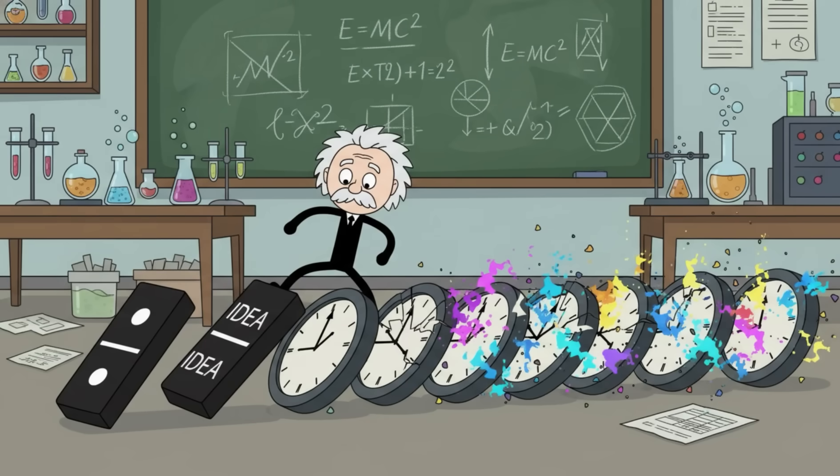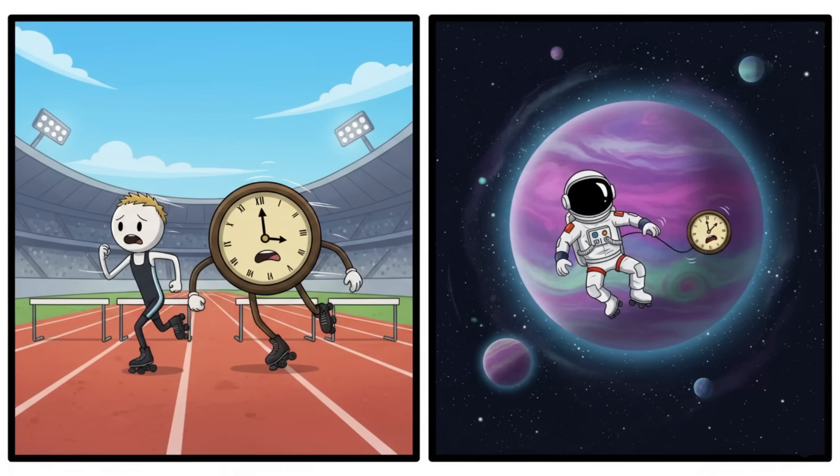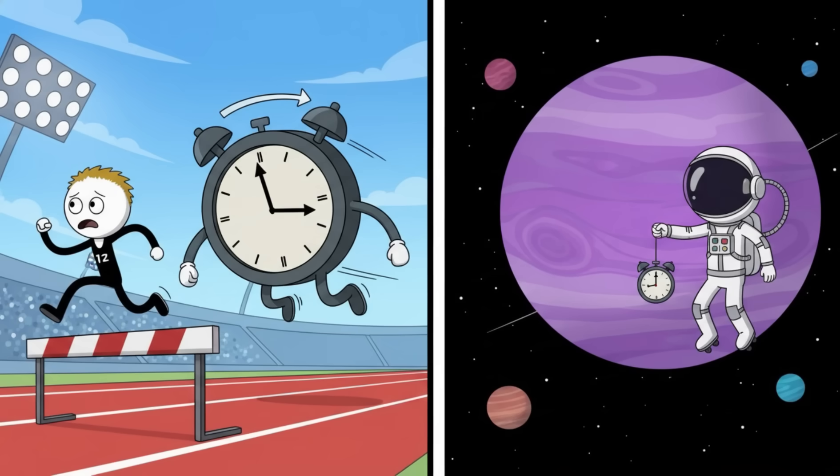Einstein kicked the first domino when he showed that time doesn't flow the same for everyone. It stretches, bends, slows down, speeds up. Basically time behaves like a drunk acrobat on roller skates. Move faster, time slows. Get near a massive object, time slows again. Sit on your couch eating leftover noodles, time still slows, but that's just depression.